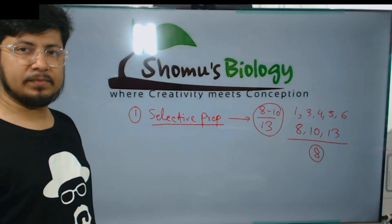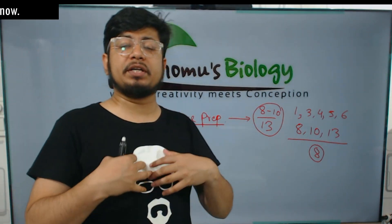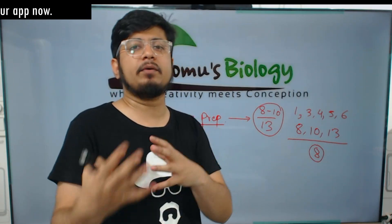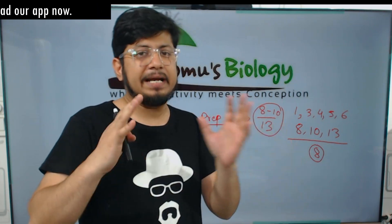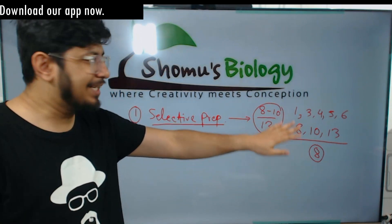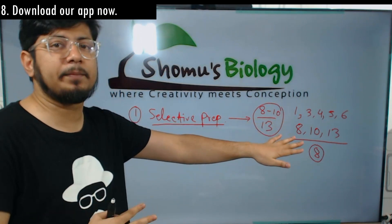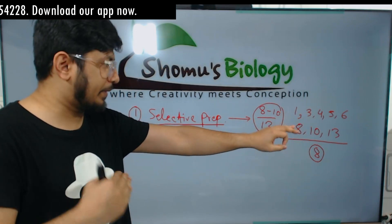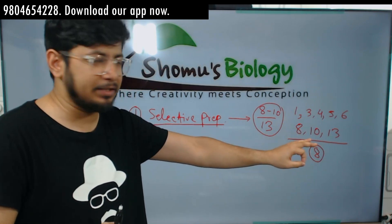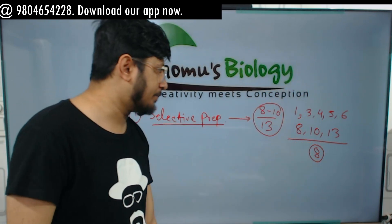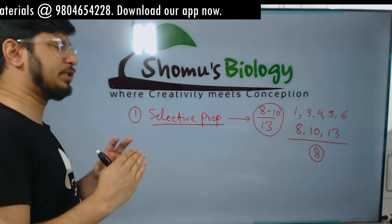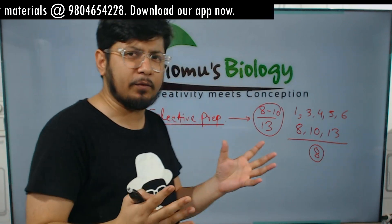Depending upon your preparation skills and your background — whether you are from botany, zoology, or physiology — you select your important units accordingly. These 8 units are very important because the number of questions in Part B and Part C from these units has been consistently high in past question papers. Preparing 8 to 10 units is a good number that will help you get enough questions in your plate to attend and qualify.